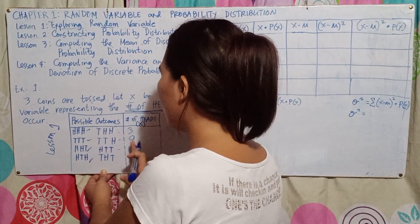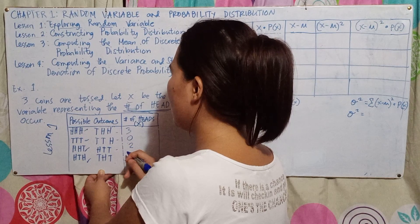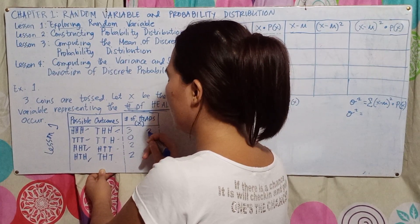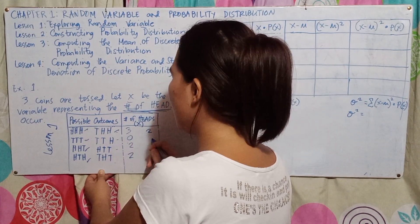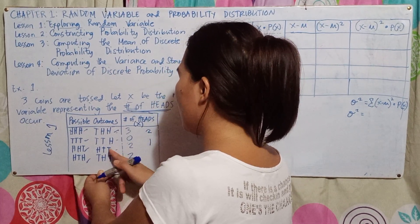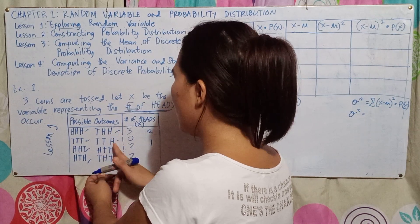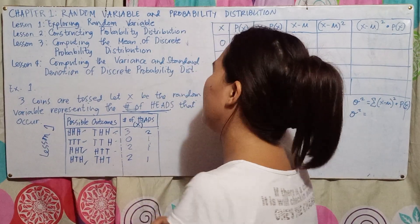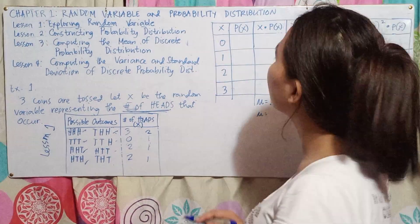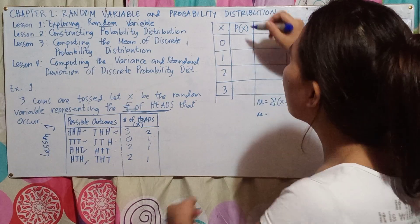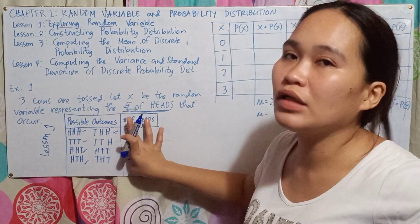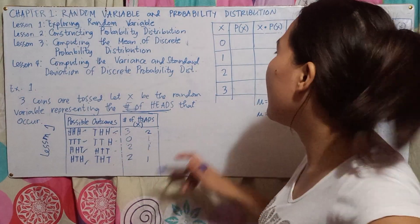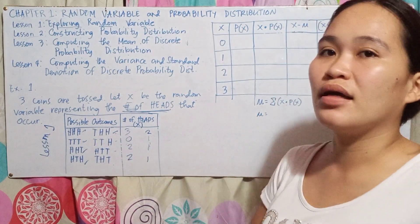Next, duha ang heads diri. Duha gihapon. Duha. Duha. Then isa. Isa. Isa. So since ang number na involved sa variable X is 0, 1, 2, and 3 lang, gi-arrange sila as 0, 1, 2, and 3.